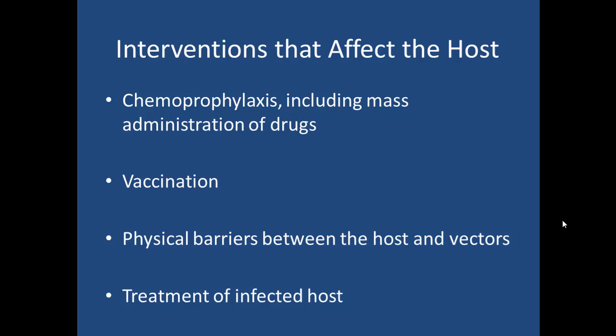There are many different ways you can prevent the disease from affecting the host. Chemoprophylaxis is a major one. This includes things like mass drug administrations, which are campaigns in which you give everyone the preventive treatment — it could be a vaccine, or a treatment assuming they're all infected — such as mass drug administration for malaria or soil-transmitted helminths. Vaccination can be considered a chemoprophylaxis, but it prevents the disease entirely, while true chemoprophylaxis may just prevent it for a short-term period. There are also physical barriers between the host and the vectors, such as bed nets.